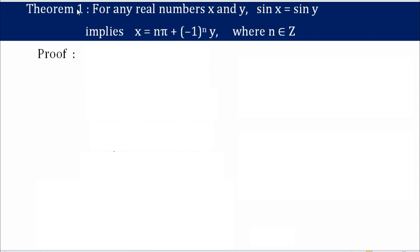Hello students, in this video let's discuss Theorem 1 of Trigonometry. For any real numbers x and y, sine x equals sine y implies x equals n pi plus minus 1 whole raised to n into y, where n belongs to integers. We need to prove this statement, so let's see how we can do that.